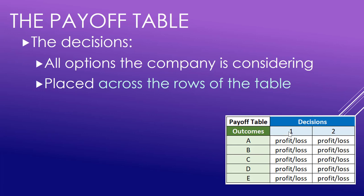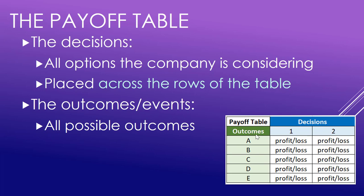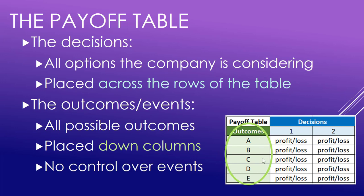The decisions are placed across the rows of the table. Here's a sample table with decisions one and two across the rows — if there were a decision three, we'd just keep going down. The outcomes or events are what the company has no control over; these are placed down the columns. We have no control over these events — we don't know whether they will happen or not.